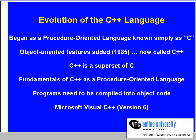The programming language known today as C++ evolved from the procedure-oriented language known simply as C. C was developed in 1972 at Bell Laboratories. In 1985, there were several enhancements made to this language. Among these enhancements were object-oriented features. This enhanced version of the C language was renamed C++.